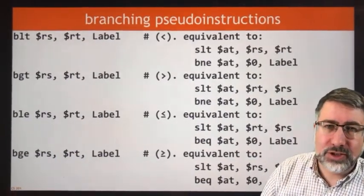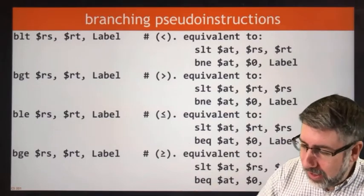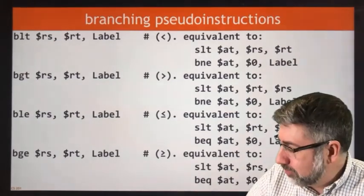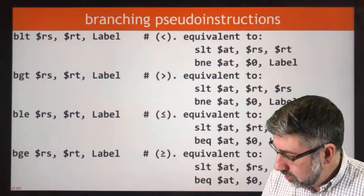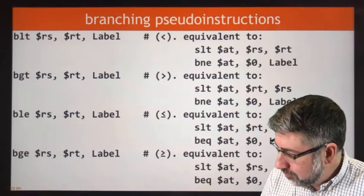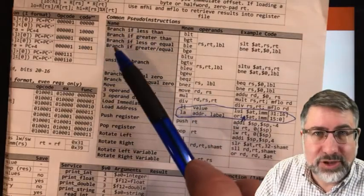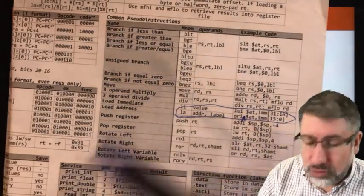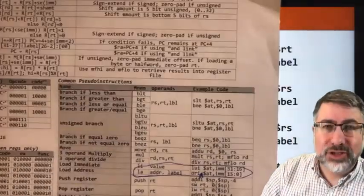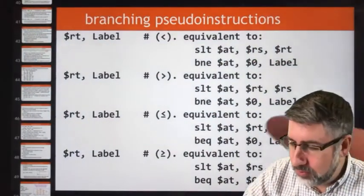There are pseudo instructions that allow you to combine a set and a branch, and I believe these are also on the sheet. Yeah, we have branch if equal and branch - here we go. These pseudo instructions are on the sheet, but don't forget that they translate into two real instructions and that can change the efficiency of your code.